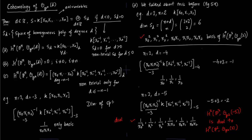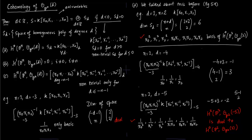We write down the dimension of the space in part C as C(−d−1, n). This is just a combinatorial formula. In the first case d = −3: C(3−1, 2) = C(2, 2) = 1. For d = −4: C(4−1, 2) = C(3, 2) = 3. For d = −5: C(5−1, 2) = C(4, 2) = 6. So the dimension formula C(−d−1, n) accounts for all these cases.